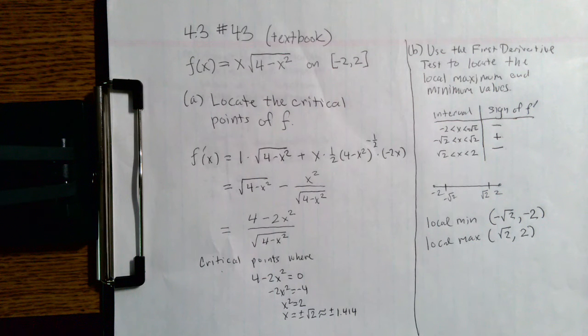From negative 2 to negative square root of 2, from negative square root of 2 to square root of 2, and from square root of 2 to 2. That's what I have listed here for those three intervals.